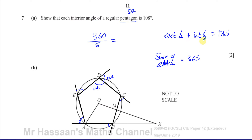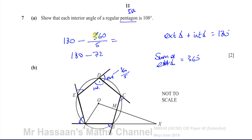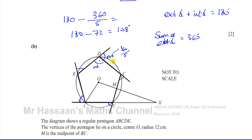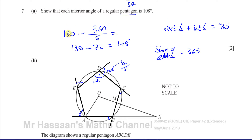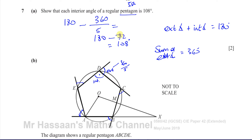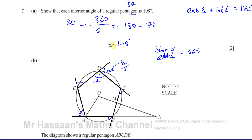If I want to find the interior angle, I just do 180 minus the exterior angle, because they add up to 180. So 180 minus 72 — because 360 divided by 5 is 72 — gives me 108. So 180 minus 72 equals 108 degrees, which is the answer to part A.